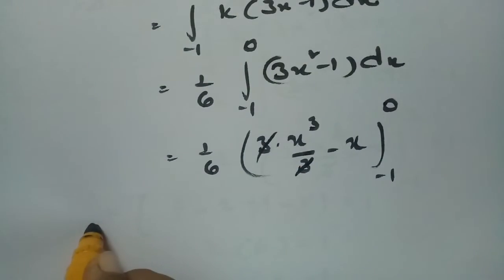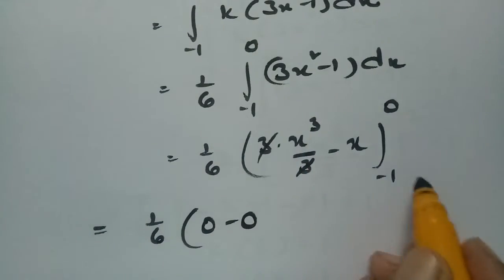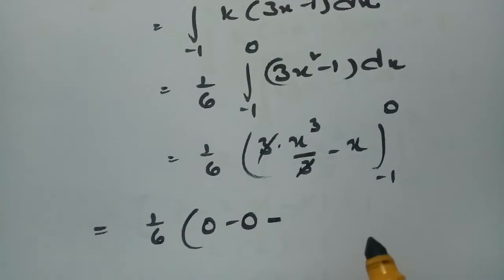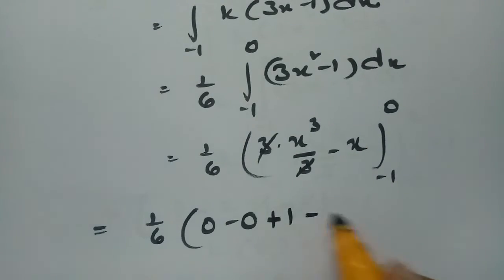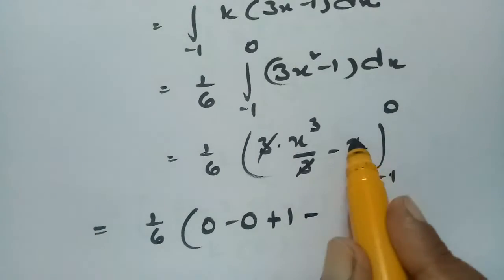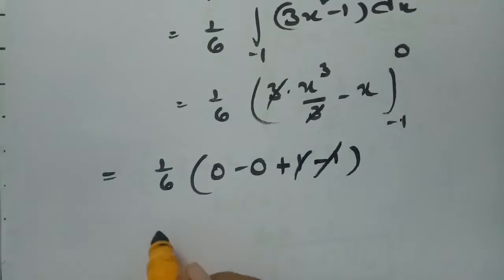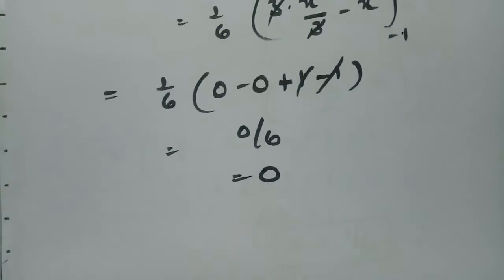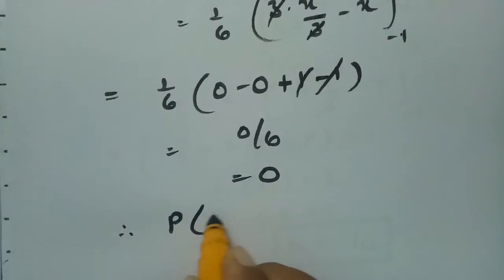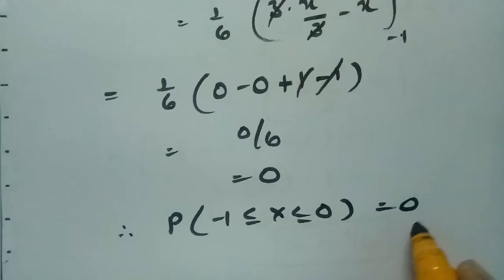Substituting the upper limit 0: 0³ - 0 = 0. For the lower limit -1: (-1)³ - (-1) = -1 + 1 = 0. So the value is (1/6) times (0 - 0) = 0. Therefore, the probability when x lies between -1 and 0 is 0.